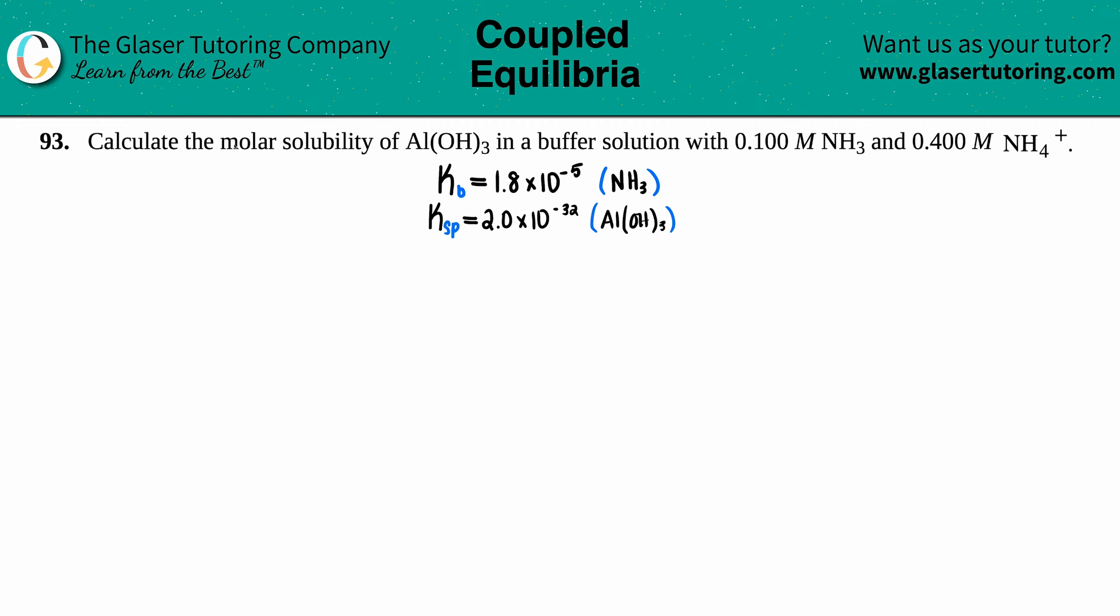Number 93: Calculate the molar solubility of Al(OH)₃ in a buffer solution with 0.100 M NH₃ and 0.400 M NH₄⁺. To do this problem, we need some constants from the back of the textbook.